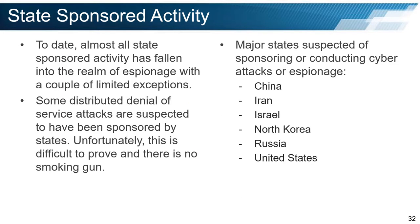To date, almost all state-sponsored activity has fallen into the realm of espionage, with a couple of limited exceptions. There have been distributed denial of service attacks suspected to have been sponsored by states, such as the attacks on Estonia and Georgia. Unfortunately, this is difficult to prove and there is no smoking gun. Major states suspected of sponsoring or conducting cyber espionage or cyber attacks include China, Iran, Israel, North Korea, Russia, and the United States.